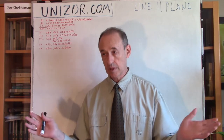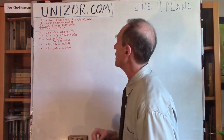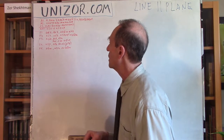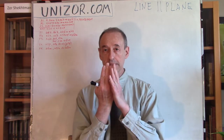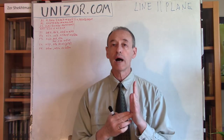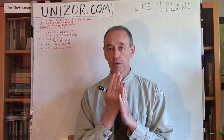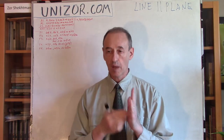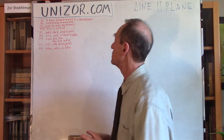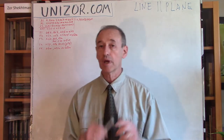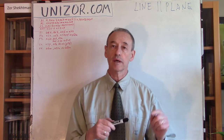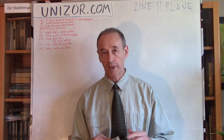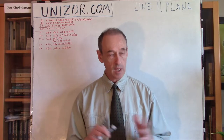Axiom number one: if two points belong to a plane, then the line which connects these two points also belongs to the plane. The second axiom: if a point belongs to the intersection between two planes, then there is a whole straight line where these planes intersect, and this line contains the point. The third axiom: if you have three points in space which are not lying on the same line, there is one and only one plane which goes through them.